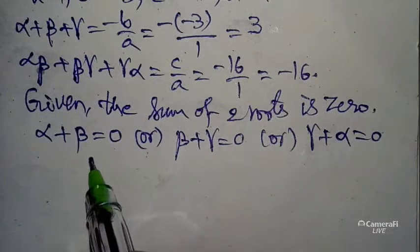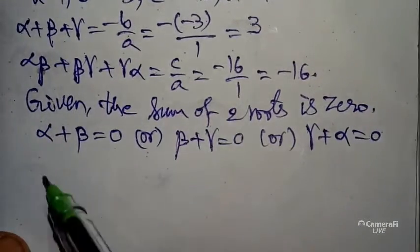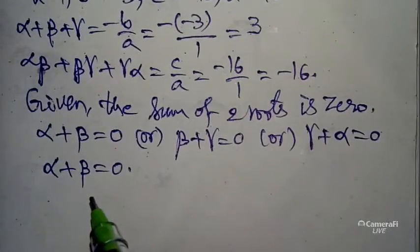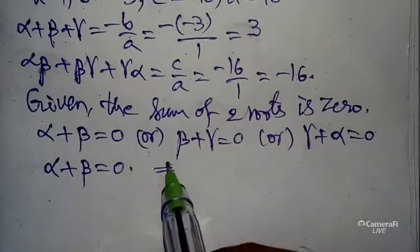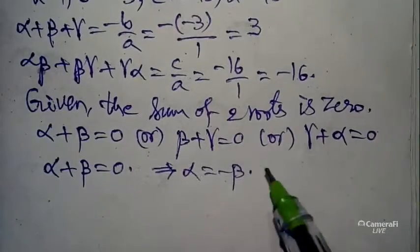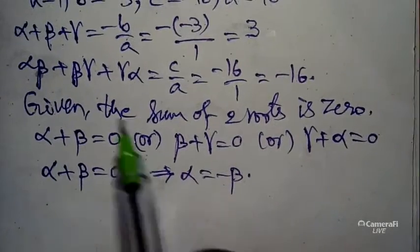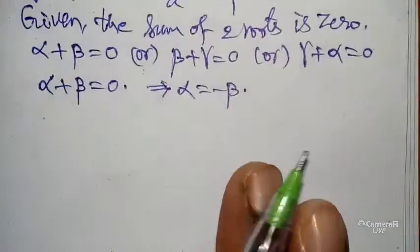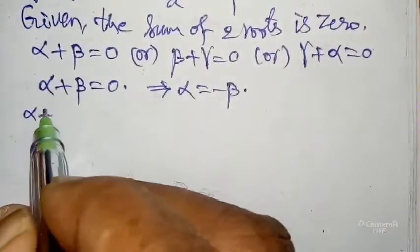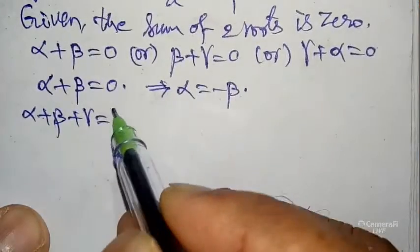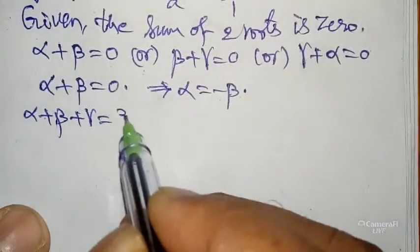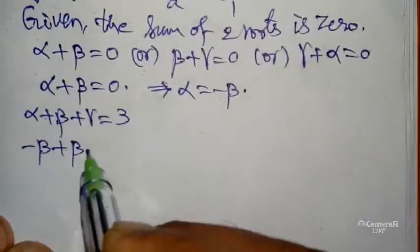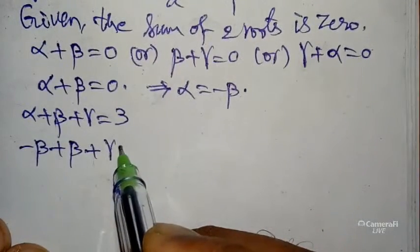The first one is best. Take alpha + beta = 0, which gives alpha = -beta. Now substitute this into alpha + beta + gamma = 3. So -beta + beta + gamma = 3.